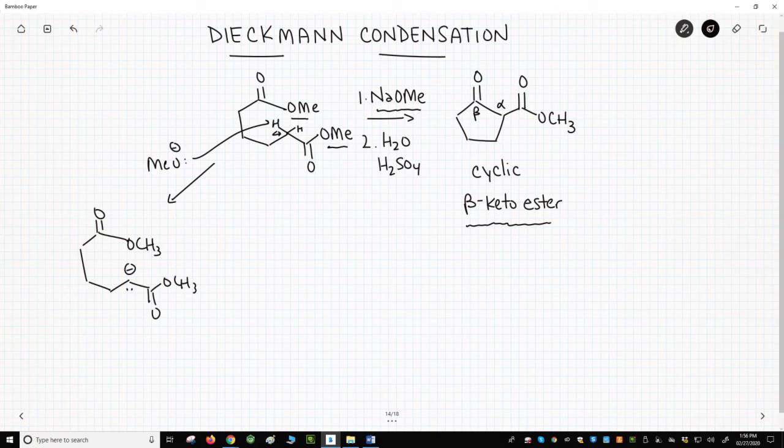Here is that enolate. Notice that we have a nucleophile that is one, two, three, four, five atoms away from an electrophile, the carbonyl. The enolate will attack the carbonyl and form a five-membered ring